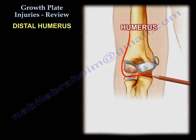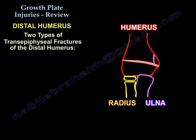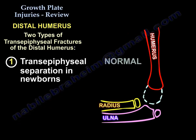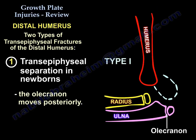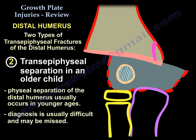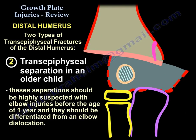Moving on to the distal humerus: trans-epiphyseal separation of the distal humerus has two types — one occurring in the newborn and one in an older child. With this type of injury, consider child abuse. Physial separation of the distal humerus usually occurs in a younger child; the diagnosis is usually difficult and may be missed. This separation should be highly suspected with elbow injuries before the age of one, and it must be differentiated from an elbow dislocation.